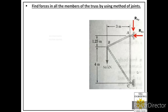Now let us label the reaction provided by the roller support. Roller support provides only one reaction, normal to its surface. We don't know its direction, so we assume it is acting towards the left side. It is acting at joint C in the X direction, so we label it RCX — reaction at C in X direction.